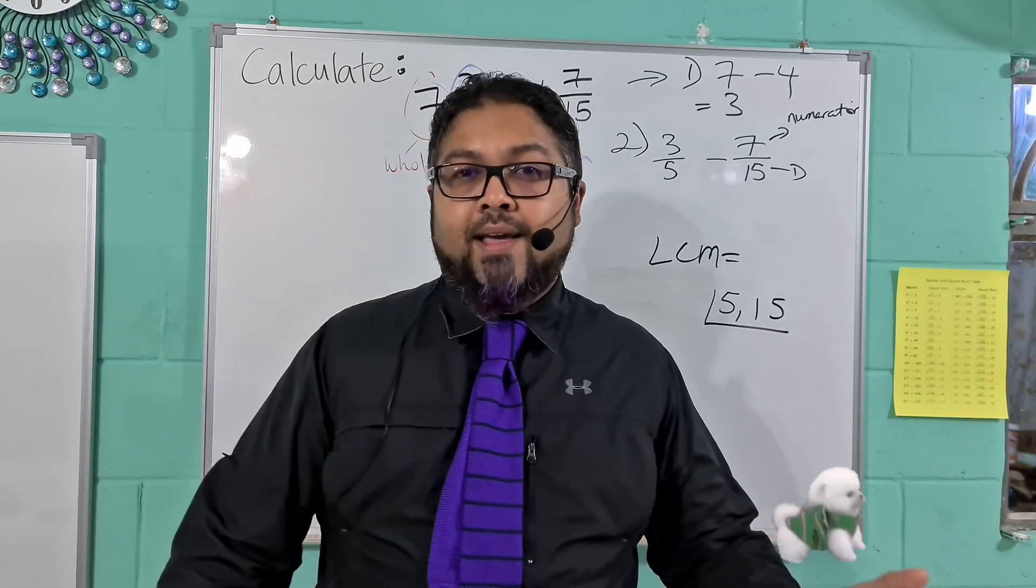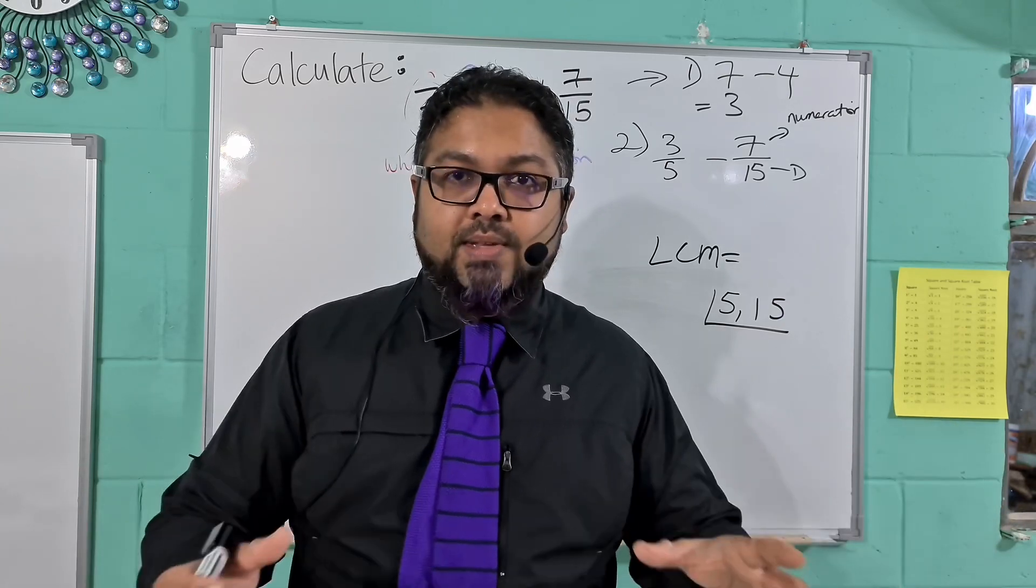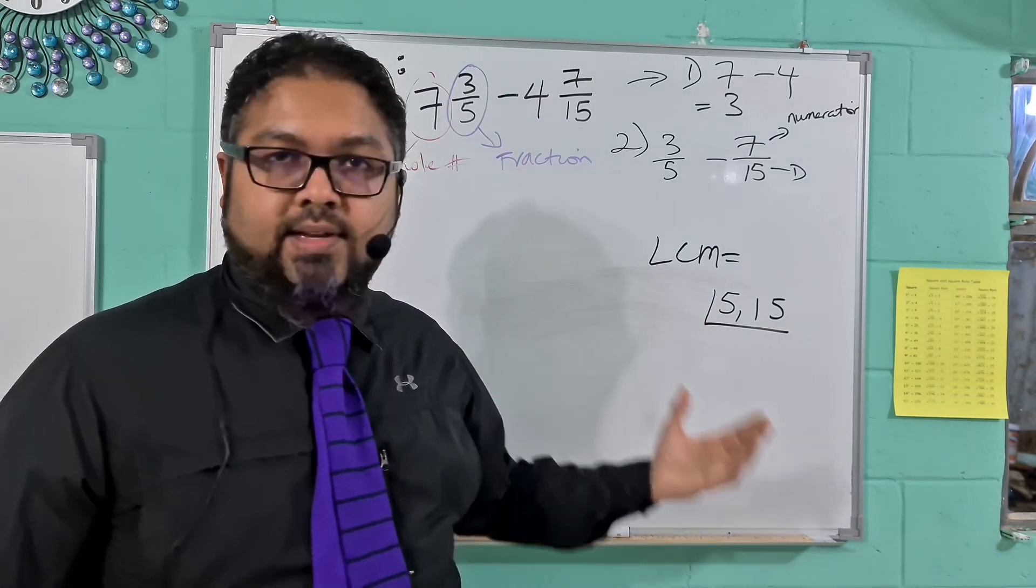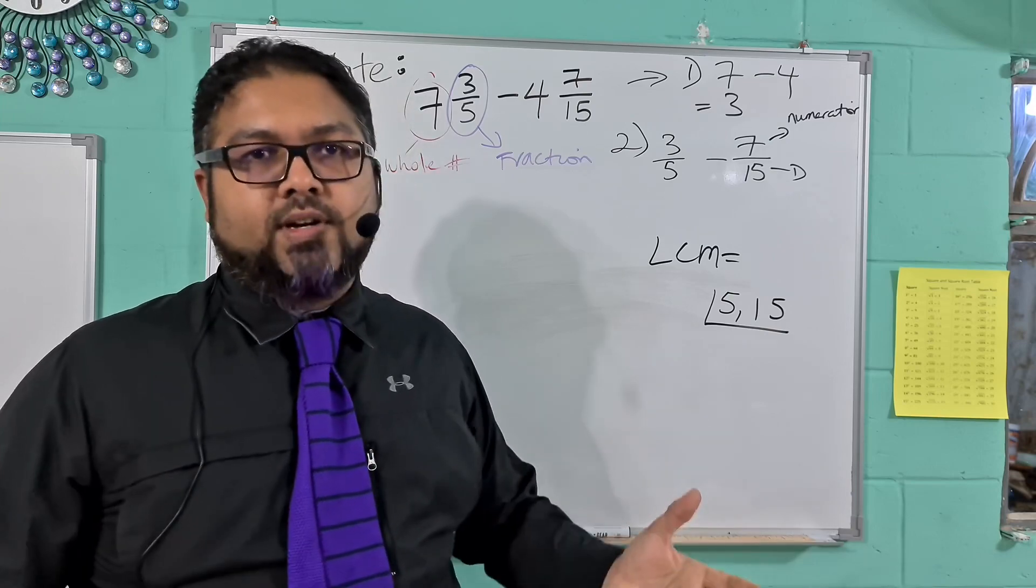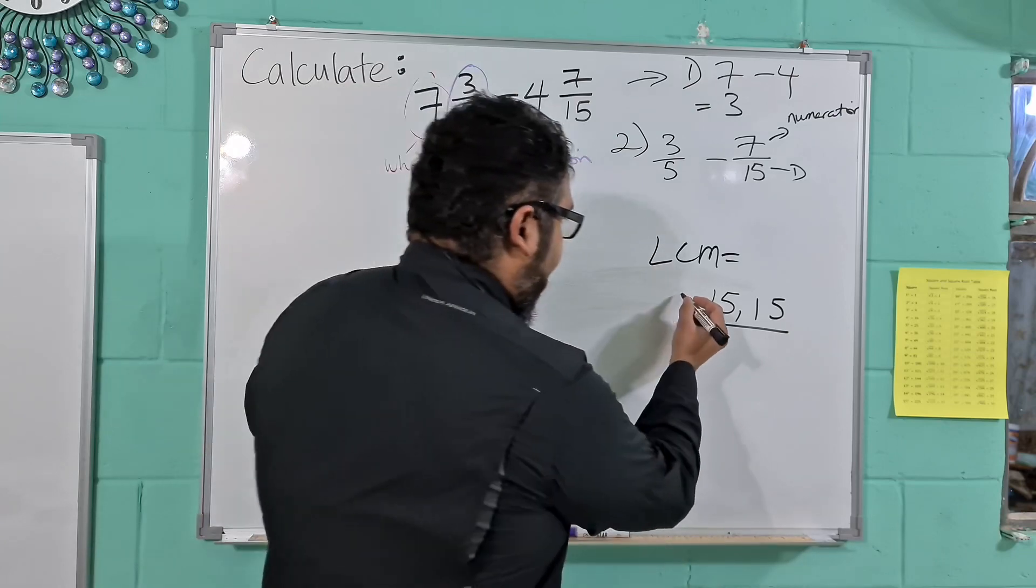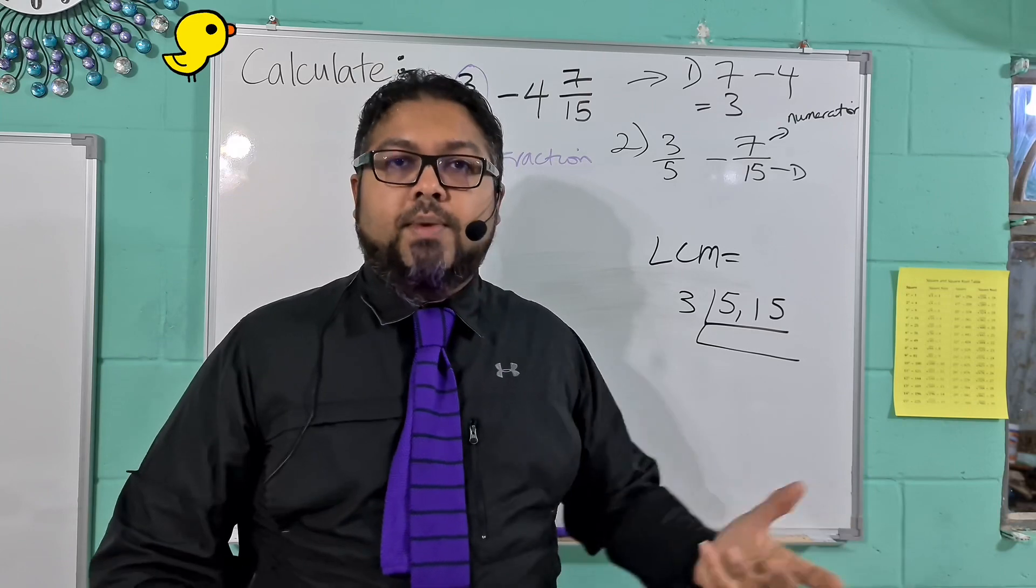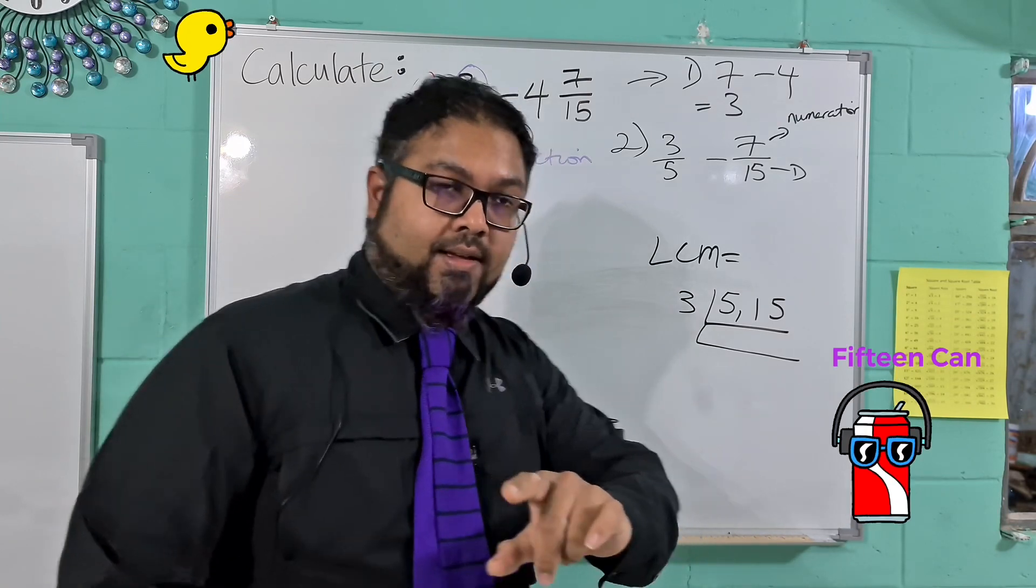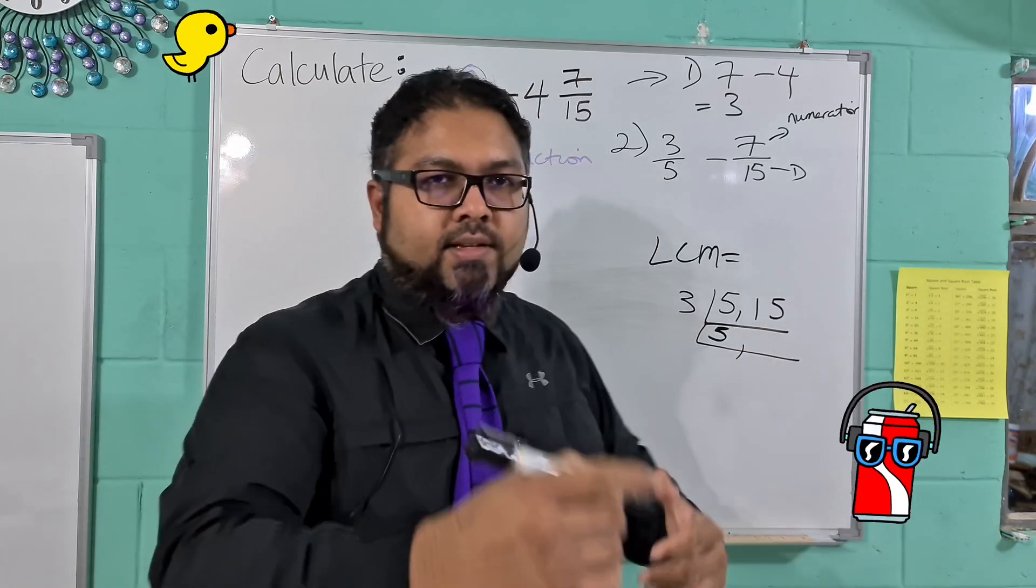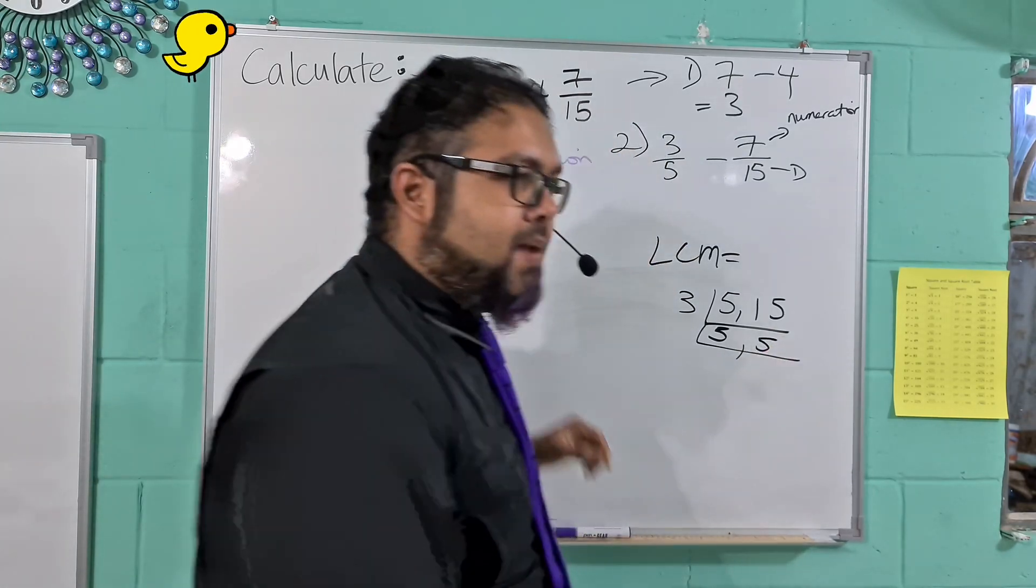The first number is 1. If we do 1, we'll be in an infinite loop. We can try 2. 5 divided by 2 will be remainder. 15 divided by 2 will be remainder. So 2 is out. Let's try 3. 5 cannot be divided by 3, it will be remainder. 15 can. So because 5 cannot, we just bring only 5, and 15 divided by 3 will give you 5.